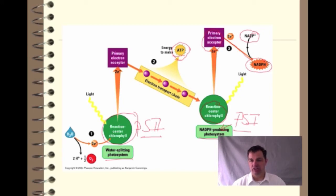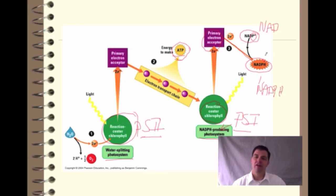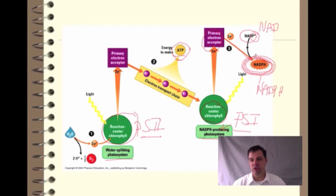As that electron transfers to photosystem I, the energy in that primary electron acceptor is going to be used to take the molecule NADP+ and make NADPH. You notice there's a little difference — there's that phosphate — so this is similar to NAD and NADH but structurally just a little bit different. It's the same concept: NADPH is a high energy state molecule holding on to a high energy electron that we're going to use later on in the next step.